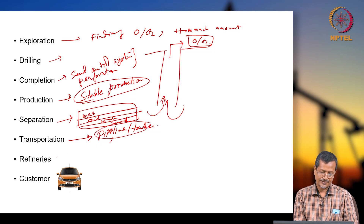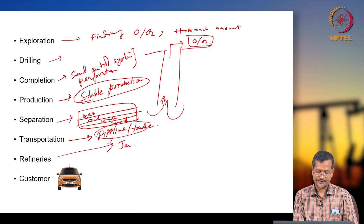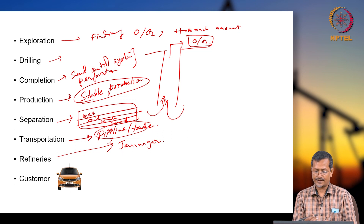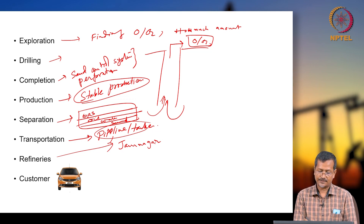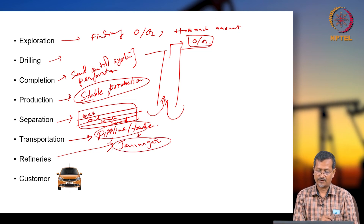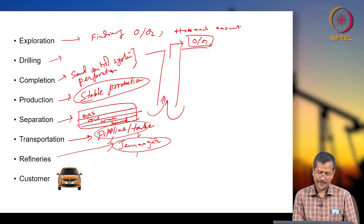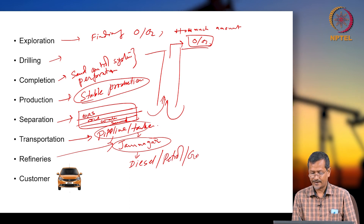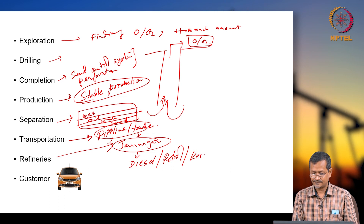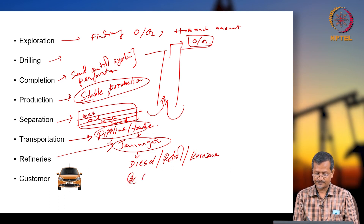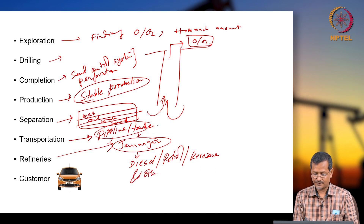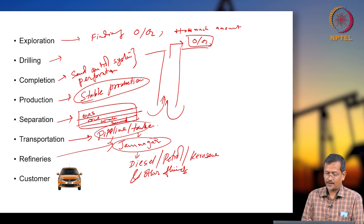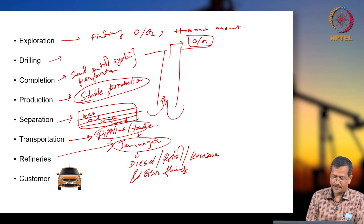Via pipeline or tanker you will reach refineries — like Jamnagar refinery for example. In India, crude oil will go to a refinery. The refinery will be producing diesel, petrol, kerosene, and other fluids. Once diesel, petrol, and kerosene are done, they will go to the customer.